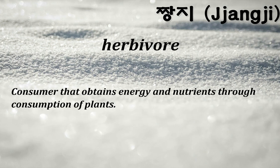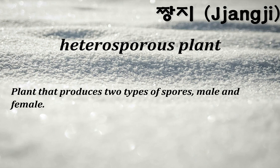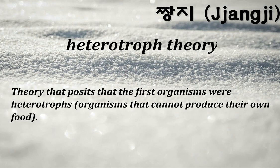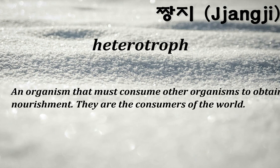Herbivore: a consumer that obtains energy and nutrients through consumption of plants. Heterosporous plant: a plant that produces two types of spores — male and female. Heterotroph theory: theory positing that the first organisms were heterotrophs — organisms that cannot produce their own food. Heterotroph: an organism that must consume other organisms to obtain nourishment; they are the consumers of the world.